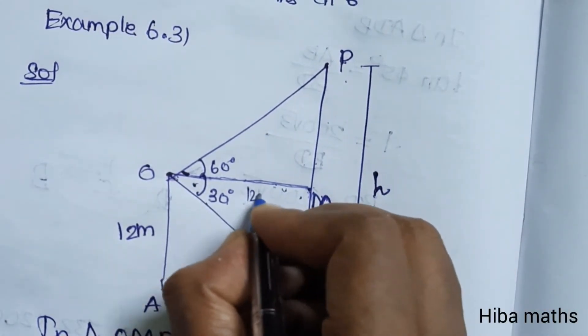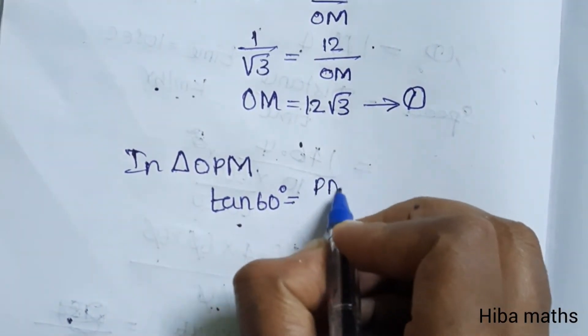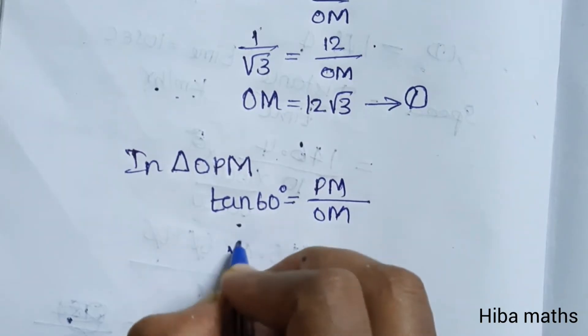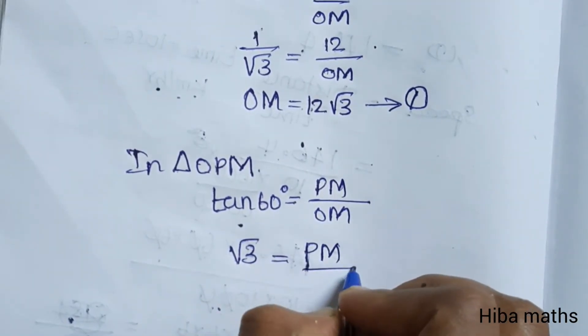OM value is equal to 12 root 3, so PM value is equal to 12 root 3. Root 3 is equal to PM by 12 root 3.